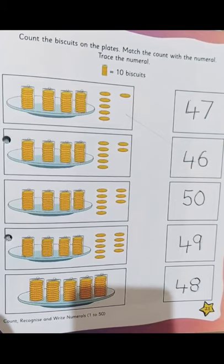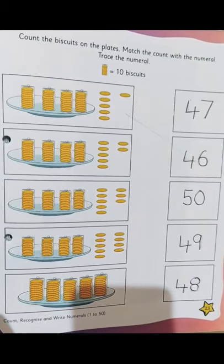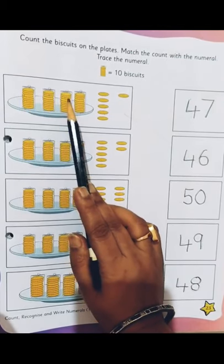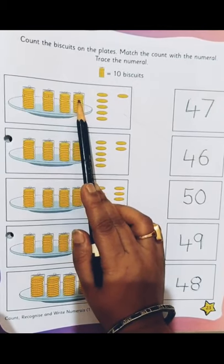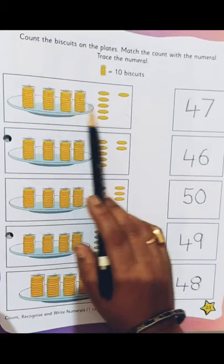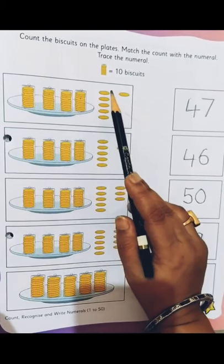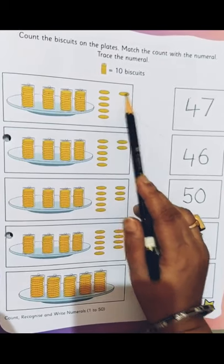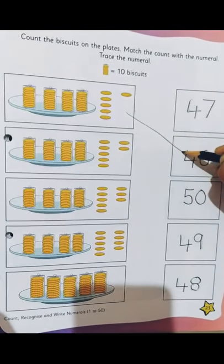Now what we are going to do? We are going to match it as we have done earlier. So again we have 10, 20, 30, 40. So there are 40 biscuits out here. And now let's count the single biscuits. 1, 2, 3, 4, 5 and 1 more. 6. So 46.